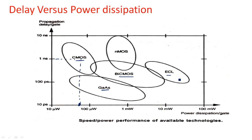ECL or bipolar technology has very high power consumption but is faster than CMOS. Gallium Arsenide has moderate power consumption with low propagation delay. So if you want high speed, use Emitter Coupled Logic; if you want low power, use MOS technology; for a moderate balance of both, use Gallium Arsenide or BiCMOS. We choose the fabrication technology depending on the application area. This covers Moore's Law, IC evolution, and VLSI processing technologies.